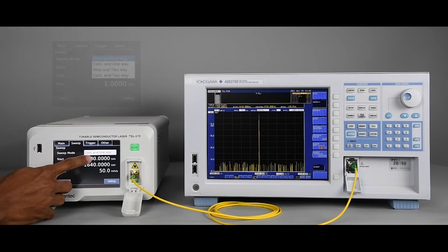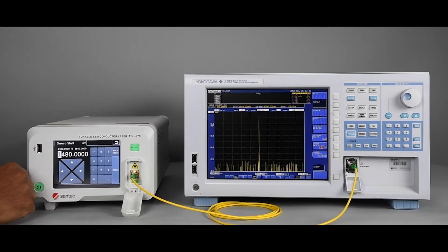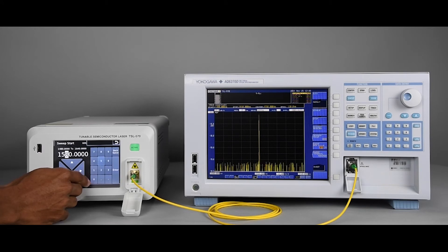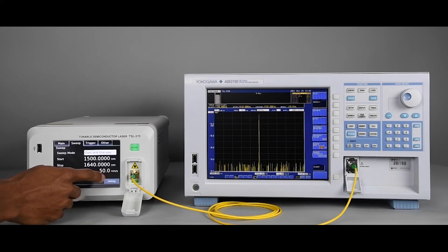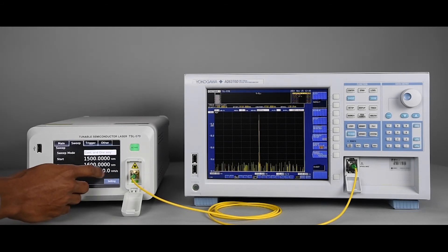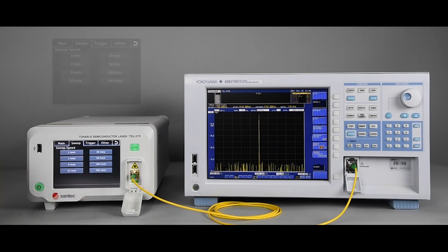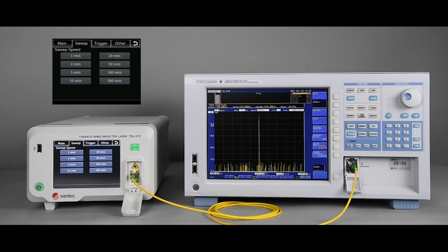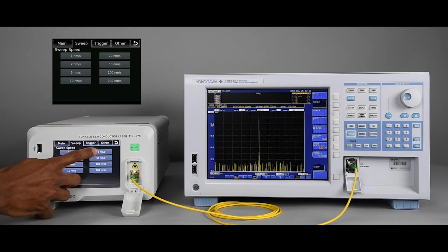Next, the starting wavelength. We will select 1500. Next, the stop wavelength. We'll select 1600. Next, the speed. The TSL 570 is able to scan at a high speed of up to 200 nm per second. We'll set 20 nm per second.